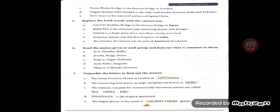Question six: read the names in each group and find out what is common. First: Java, Honshu, Baffin — these are the names of islands. Second: Zonda, Berg, Northa — these are the names of winds. Third: Kagera, Niger, Kolymba — these are the names of rivers. Fourth: Aral, Baltic, Sargasso — these are the names of seas. Fifth: Mojave, Colorado, Sonoran — these are the names of deserts.